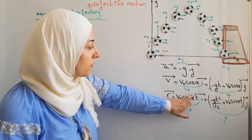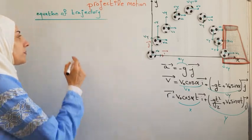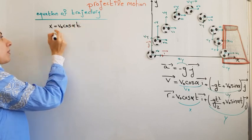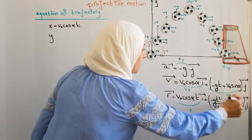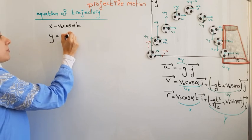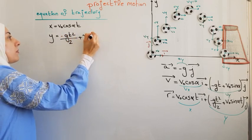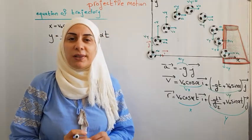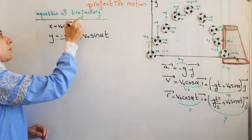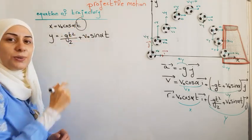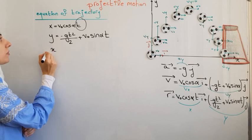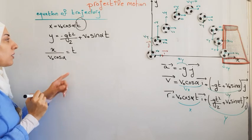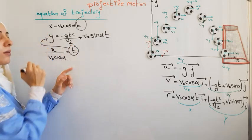We get x from the position equation — the factor multiplied by i is x, and y is the factor multiplied by j. Since we want an equation independent of time, we take t from the x equation and substitute it into the y equation.